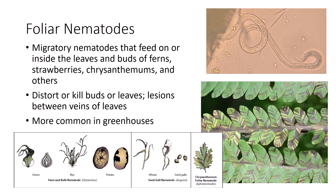Foliar nematodes, Aphelenchoides species, are migratory nematodes that feed on or inside the leaves and buds of ferns, strawberries, chrysanthemums, and many other ornamentals. These are more common in greenhouses where the humidity is high. They cause distortion and death of buds, leaf distortion, or yellow to dark brown lesions between major veins of leaves. Their symptoms may be mistaken for bacterial infections. Other nematodes that attack plants above ground cause leaf or seed galls, and still others cause deterioration of the bulbs and necks of onions and their relatives.